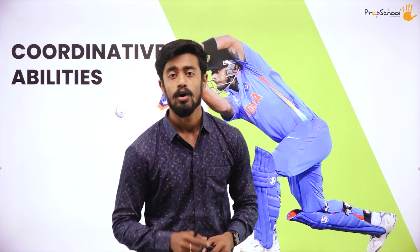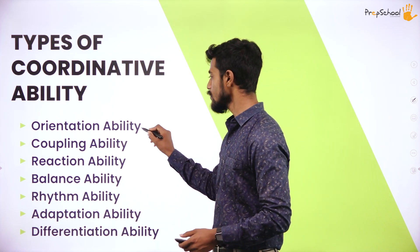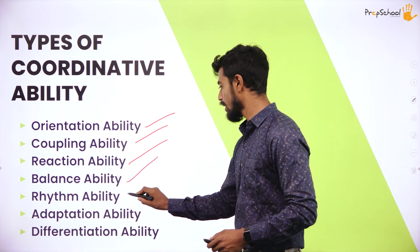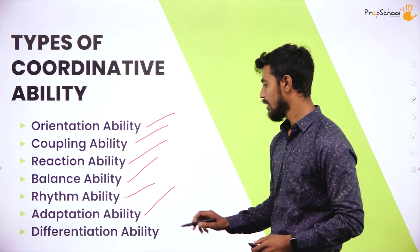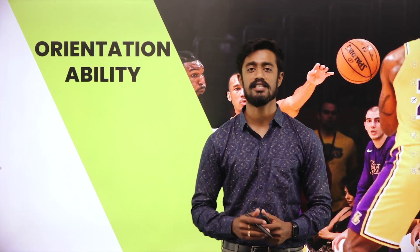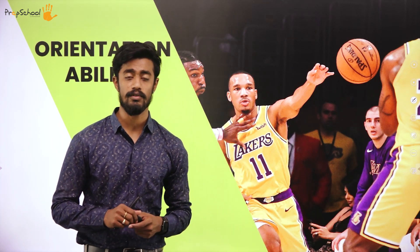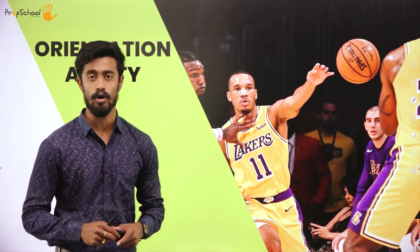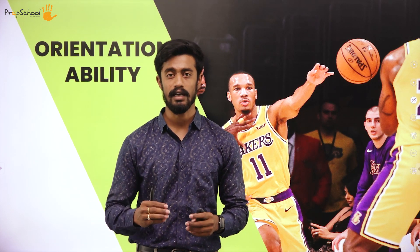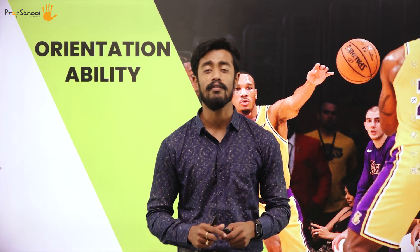We have 7 types of Coordinated Ability: Orientation Ability, Coupling Ability, Reaction Ability, Balance Ability, Rhythmic Ability, Adaptation Ability, and Differentiation Ability. The first type — Orientation Ability — is the ability of an individual to determine the position of the body or part of the body in time and space, in relation to gravity and moving objects like a ball, partner, opponent, and even the playing surface. This ability depends on the functional capacity of sensory organs, for example, the eyes.